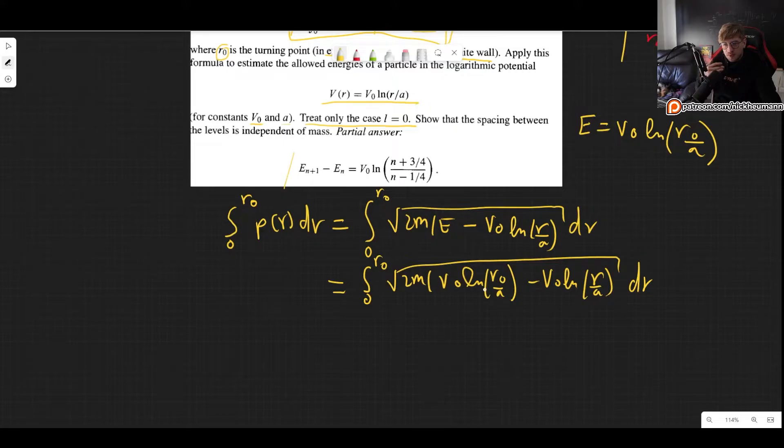Now here we can apply the property of the natural log that if we have the subtraction of two logs it is the same as having the argument of one divided by the argument of the other.